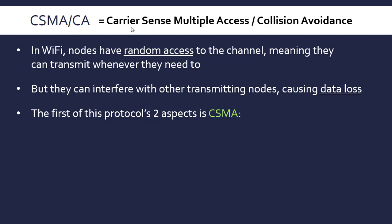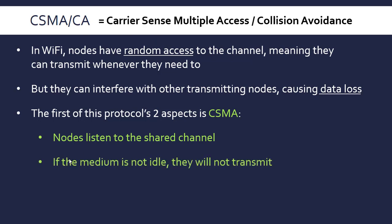The forward slash helpfully splits this protocol into two aspects. The first is the CSMA — Carrier Sense Multiple Access. The nodes will listen to the shared channel; they can receive the wireless communications with their network interface card. That's the carrier sense part. And if the channel is not idle, if someone else is transmitting, they won't transmit. If you want to avoid a collision, don't transmit when someone else is transmitting, because that's just going to cause one.